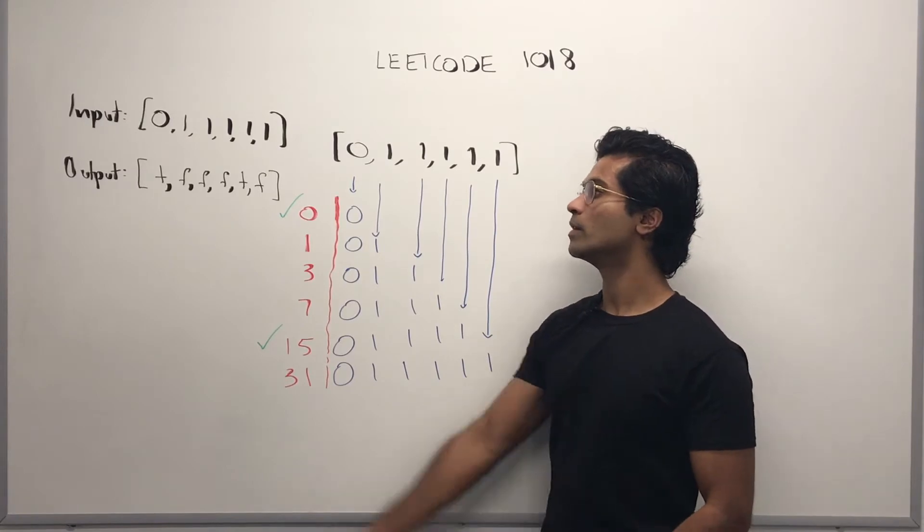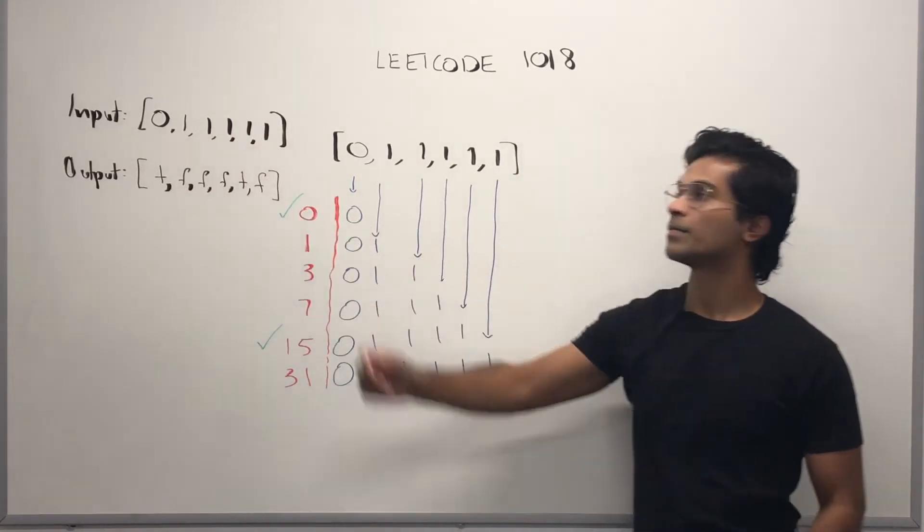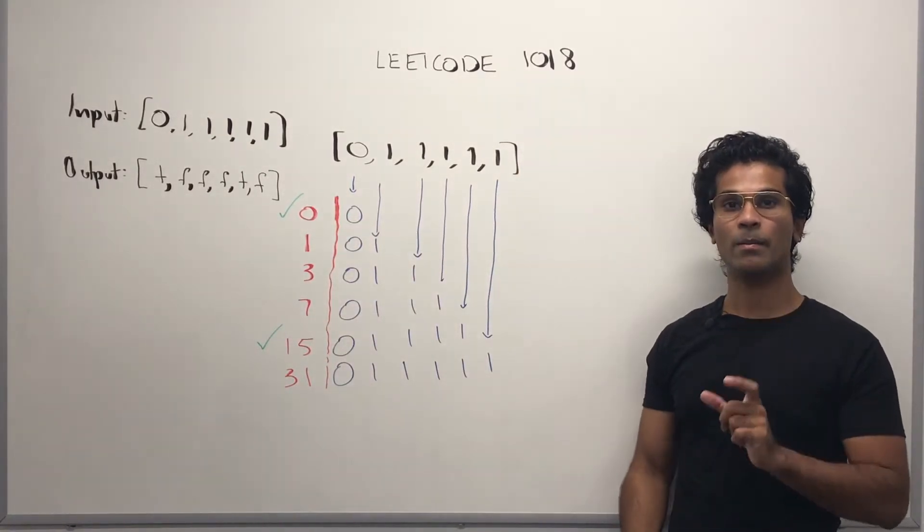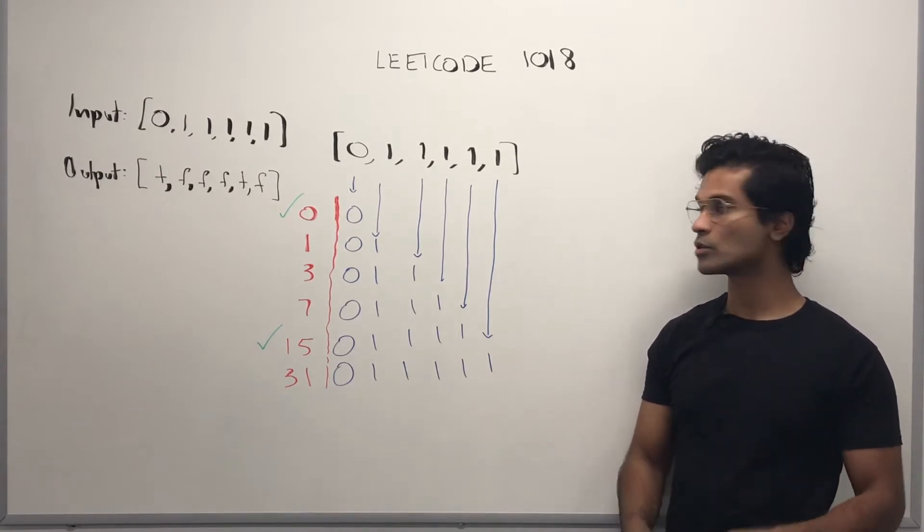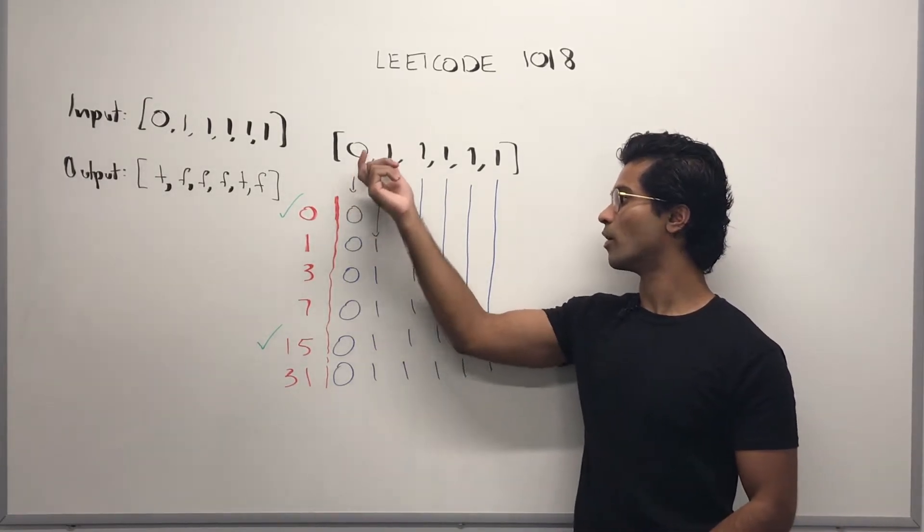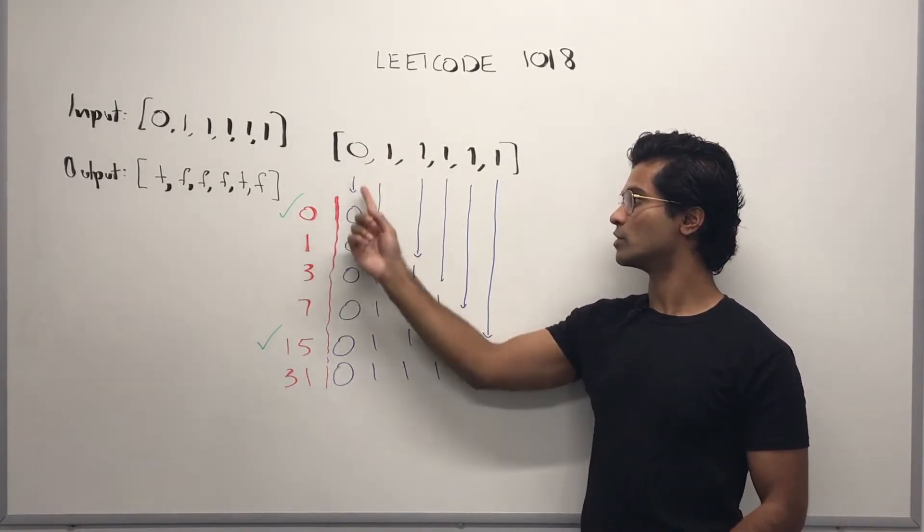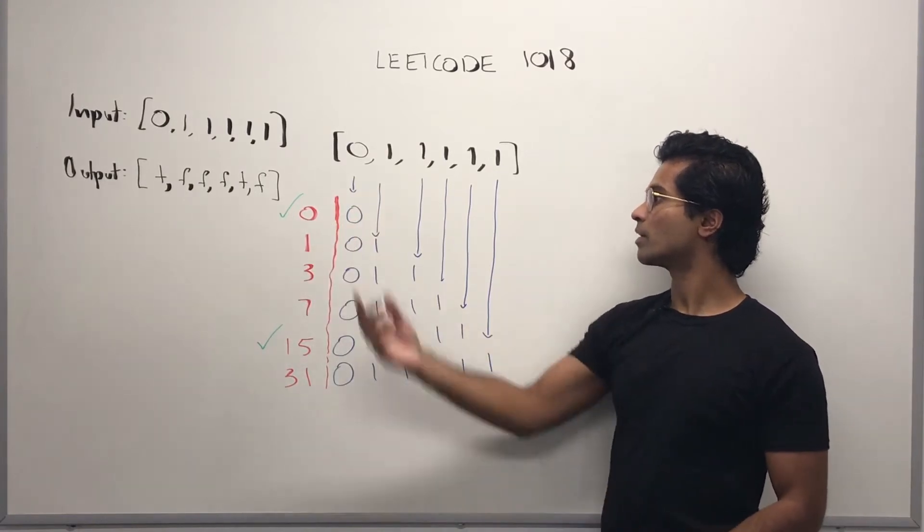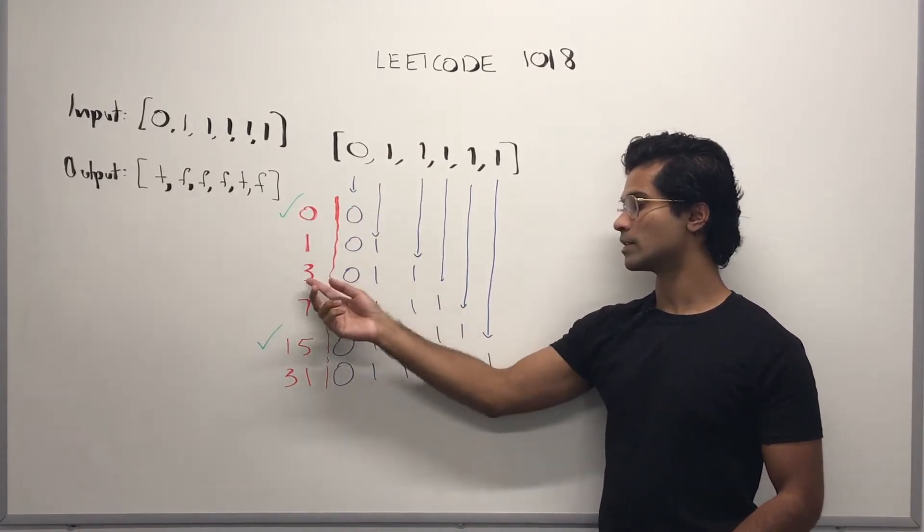So what we have to do is take the input array and take the binary equivalent number. So let's say if we have 0 and 1, that translates to 1. If we have 0, that translates to 0. If we have 0, 1, 1, that translates to 3.